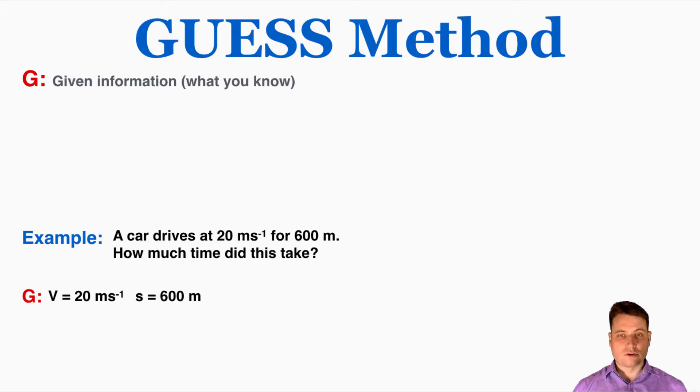So whenever you're writing that you need to make sure to write the variable is equal to a number, don't just write the number, the variable is going to be really important to helping you solve the problem. Also make sure you're including units as well.